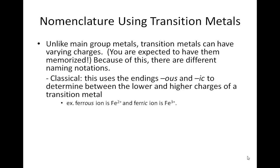We've got the classical naming system. This uses the endings OUS and IC to determine the lower and higher charges of a transition metal. OUS is for the lower charge and IC is for the higher charge. It depends on the ion for what that low charge is and what that high charge is — that's why you need to have them memorized.